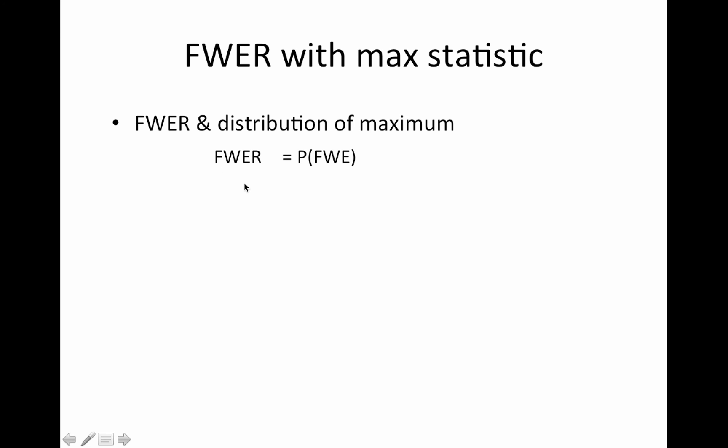So the family-wise error rate is the probability of having a family-wise error. And a family-wise error, as we saw before, is when the null is true. So remember the 2x2 table that I've been showing you guys? If we're in the first row of the 2x2 table where the null is actually true, we want to control that upper left-hand corner, the number there.